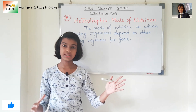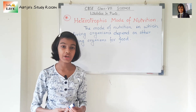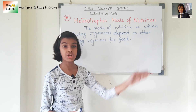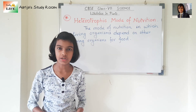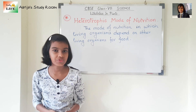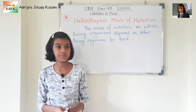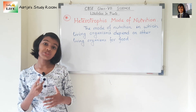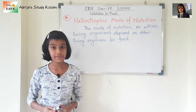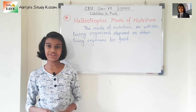So it is the mode of nutrition in which a living organism depends on another living organism for food, as they cannot make their own food. The organisms that exhibit this kind of nutrition are known as heterotrophs. For example, we, the human beings, cannot make our own food so we depend on other living organisms. In this chapter, we are going to learn about the heterotrophic mode of nutrition found in plants and the different types of heterotrophic plants.